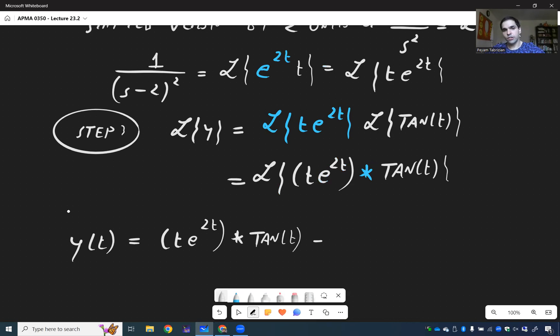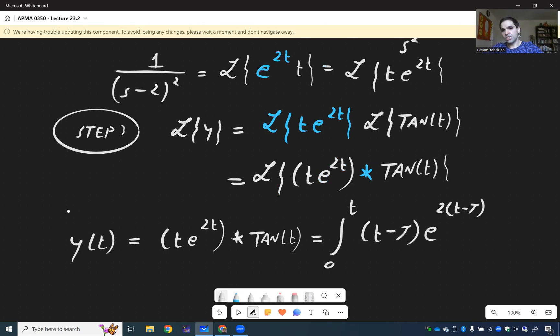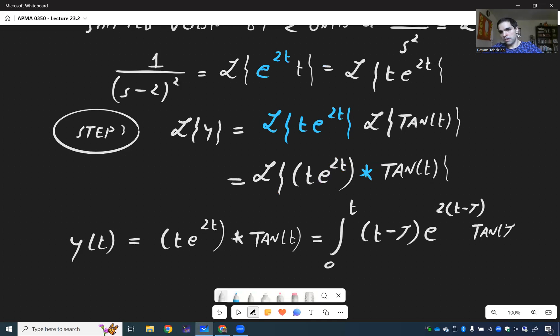So integral from 0 to t, t minus tau, e of 2 times t minus tau, tangent of tau, d tau.